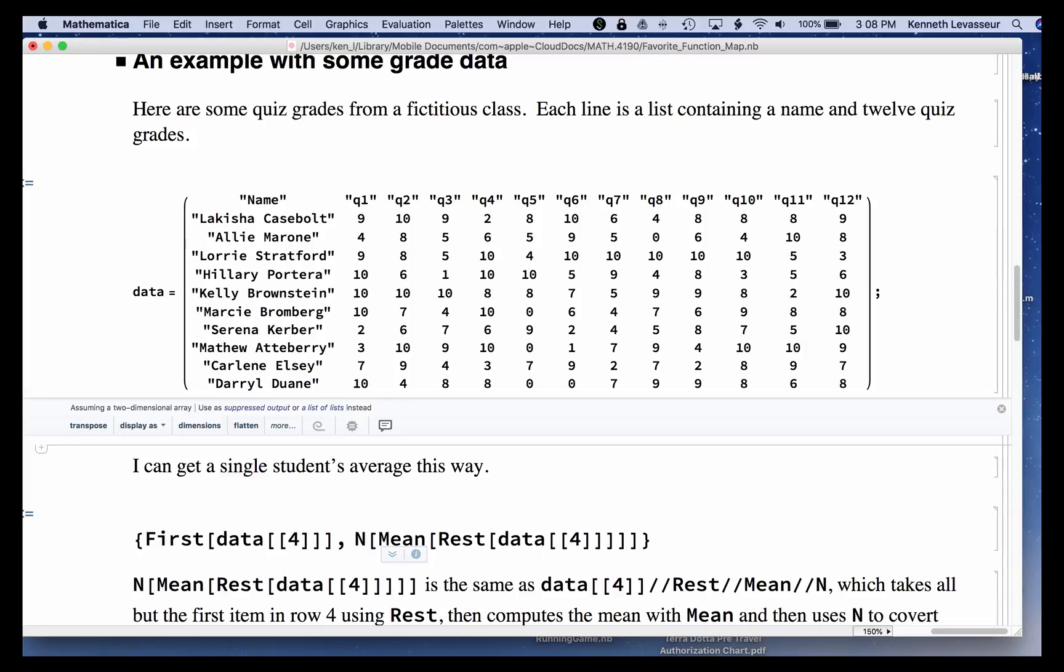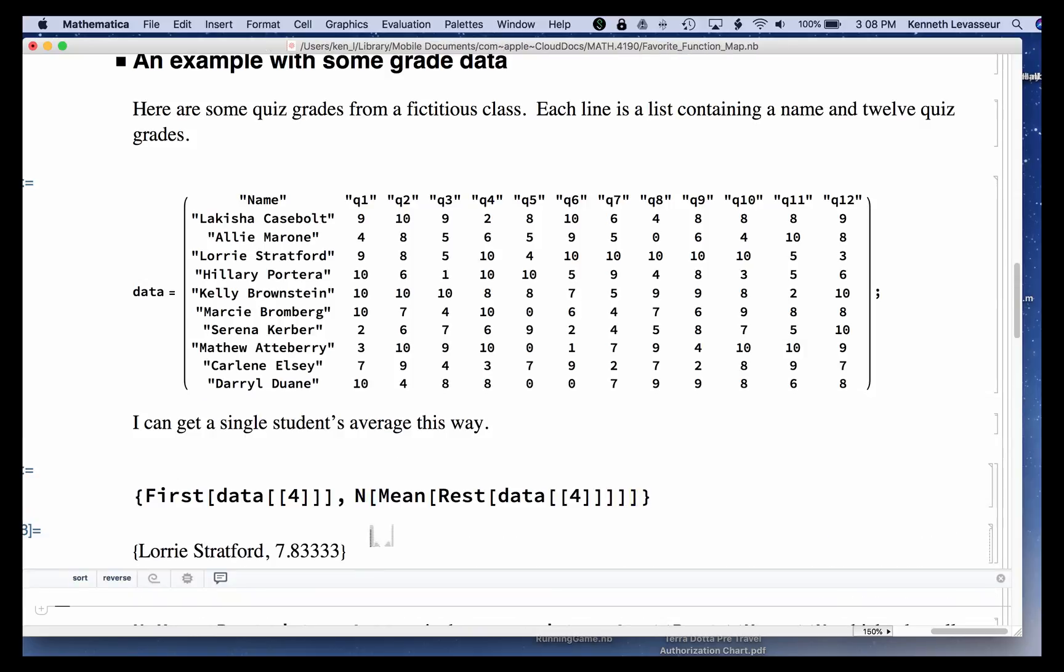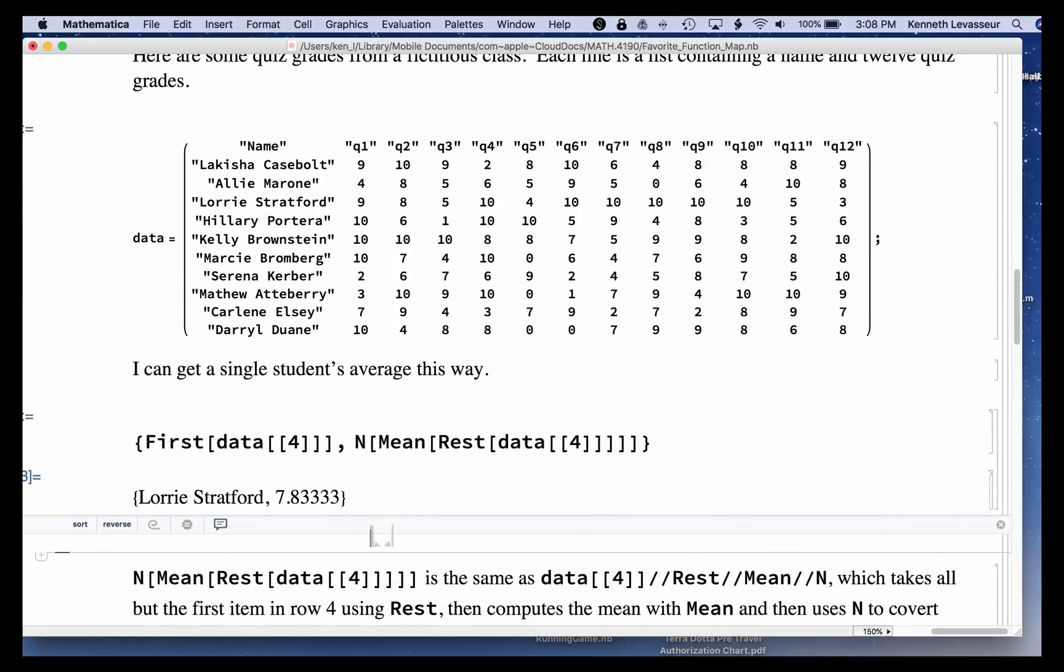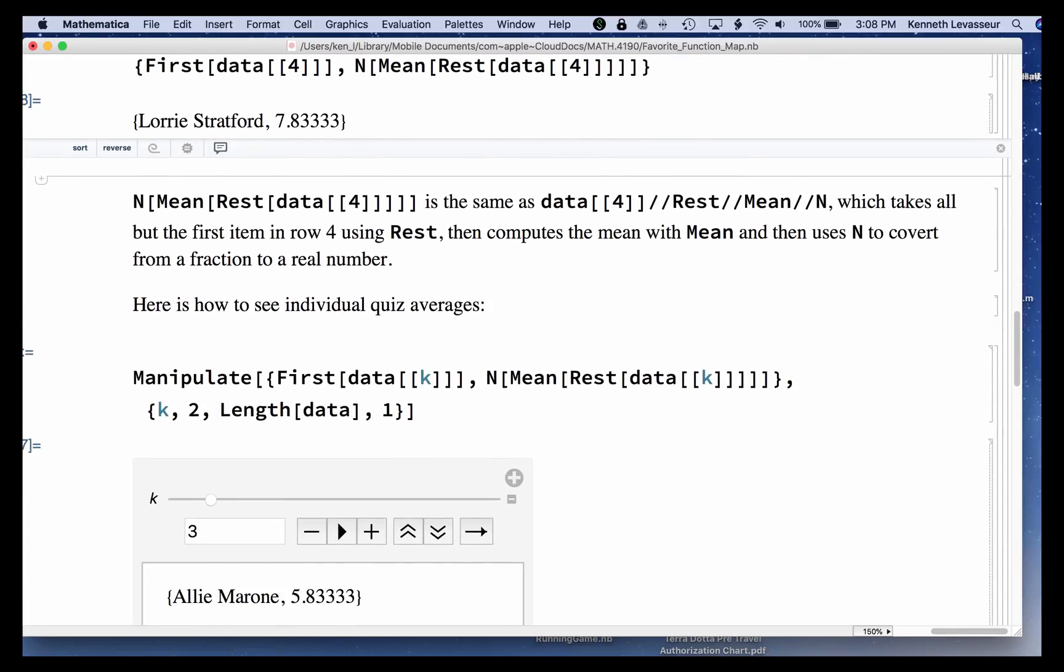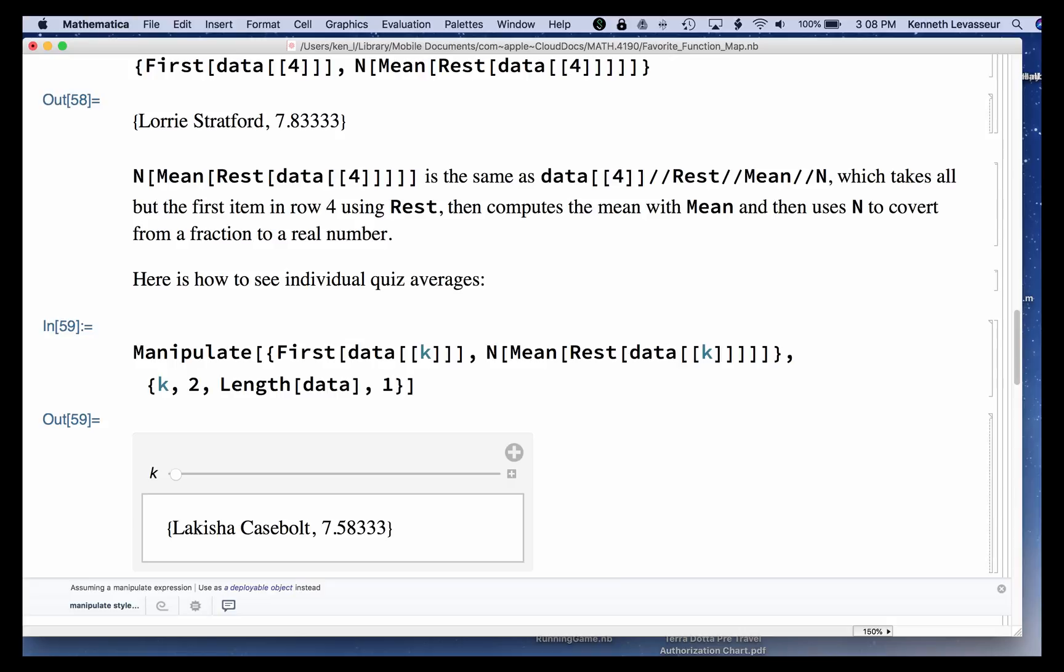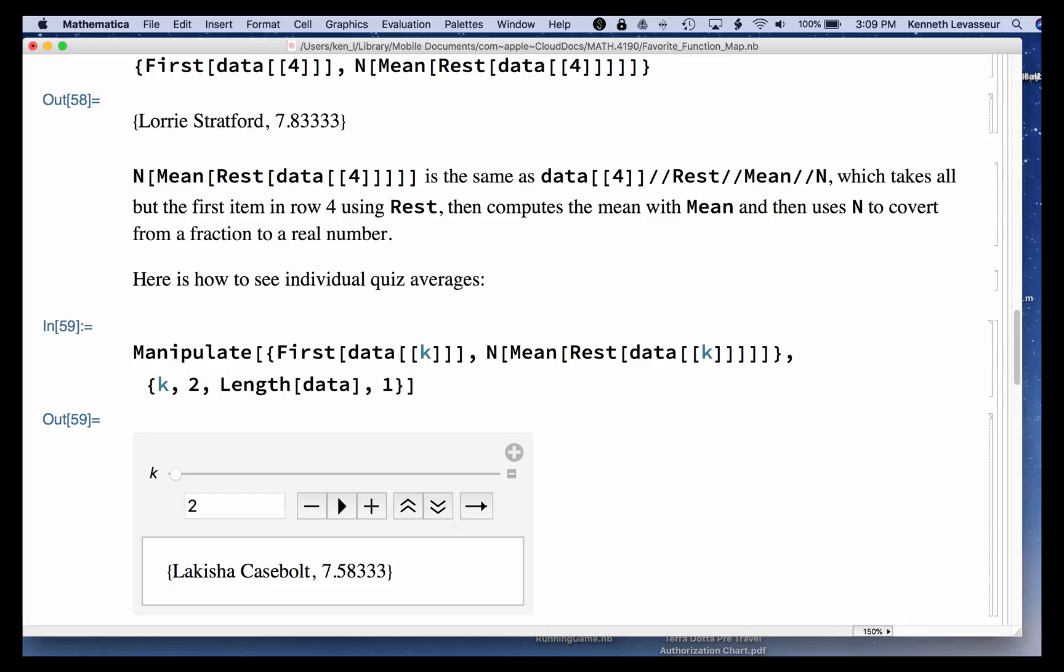Now the mean, since these numbers are whole numbers, it's going to be a fraction, which I want to convert to decimal, so I'll use capital N, which is the function that does that. And so if I evaluate this, I get Lori's name and her average. Now instead of seeing one, I can use Manipulate to do this and step through the whole class. So the first student, the second student, the third student, and so on. And so I use Manipulate.